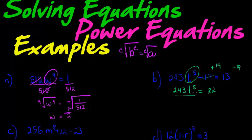Next step to get my power alone, I'll have to divide by 243 on both sides. This cancels on this side and I've got T^5 is equal to 32 over 243. So I take the fifth root on both sides.